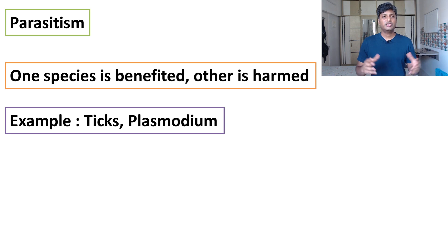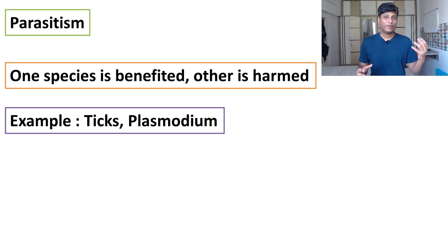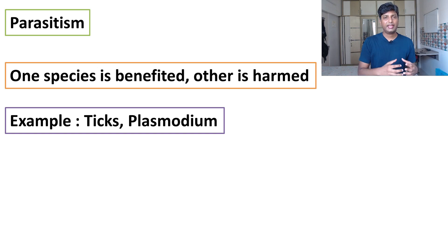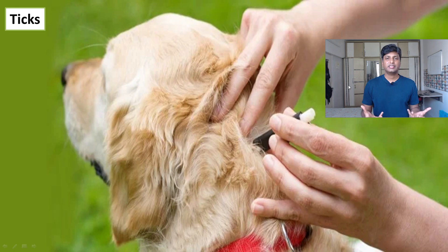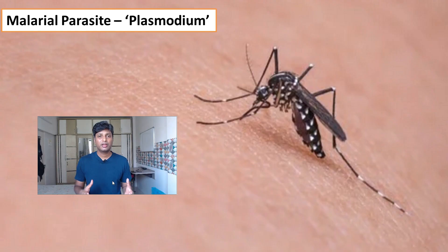Another type of population interaction is parasitism. In parasitism, one species derives benefit from the other species — the host — gaining nutrition or shelter from it while also harming it, such as causing disease. A very common example of a parasite is ticks, which grow on the body of animals like dogs and cats.